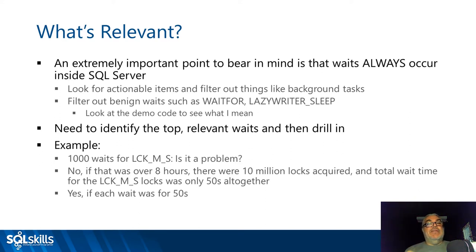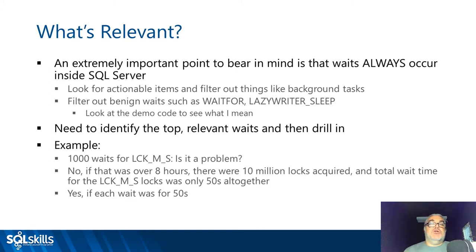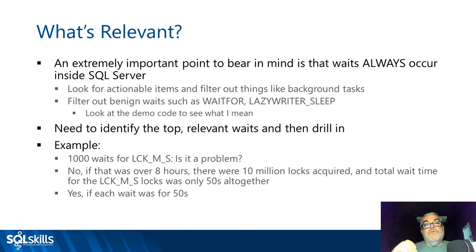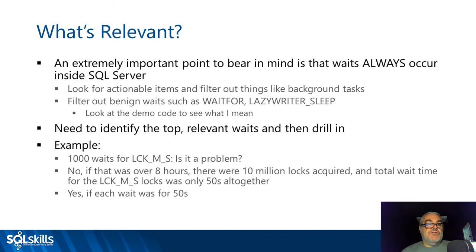You should focus on actionable waits — things you can do something about. In my code there's a list of roughly 30 to 40 waits that are generally benign and much easier to filter out. From your filtered list, identify the top waits and drill in from there. Just because you're getting waits doesn't mean they're a problem — context matters. Whether a thousand share lock waits over eight hours is a problem depends entirely on the average wait duration.